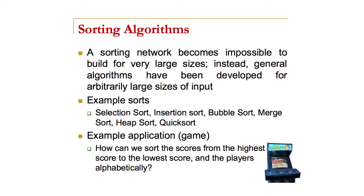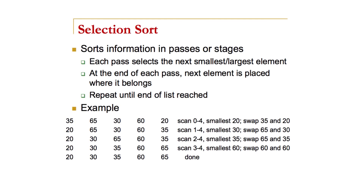We'll look at one sort in this case — the selection sort — and discuss it in terms of algorithms. An example context: imagine we have a game and we'd like to sort the highest scores from highest to lowest, using a parallel array as we saw when we talked about lists. On this slide, you can see five numbers: 35, 65, 30, 60, and 20. Initially they are unsorted, and our goal is to describe an algorithm that will sort these numbers.